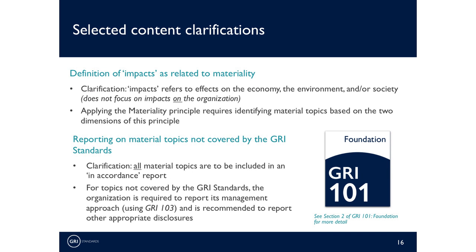I'm just going to take a few minutes now to talk through a couple of the most essential content clarifications. First, it has been clarified in the GRI standards that the term 'impact' refers to effects on the economy, the environment, and society — not to impacts on the organization itself. This means it is now even more explicit that organizations need to focus on the impacts on the economy, the environment, and society in identifying their material topics. It is acknowledged that these impacts can also be related to consequences for the organization itself, but the latter are not the focus of the reporting activity.